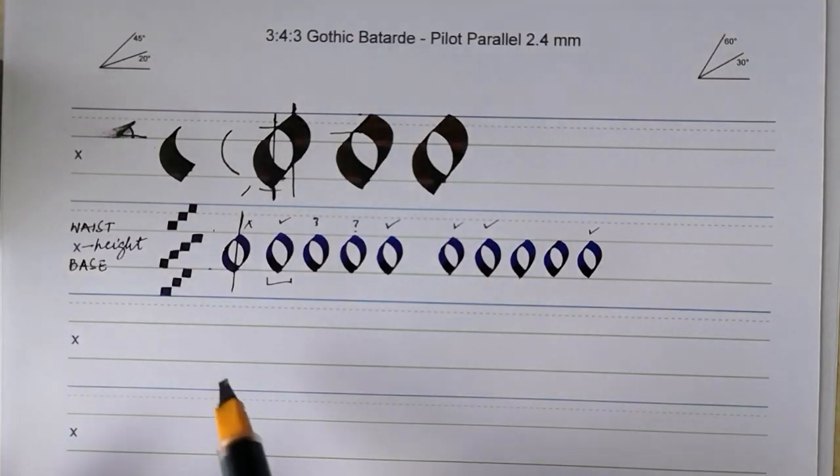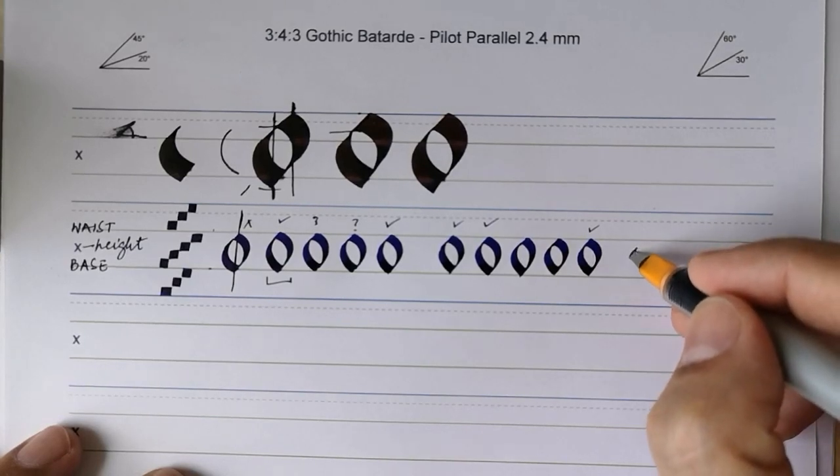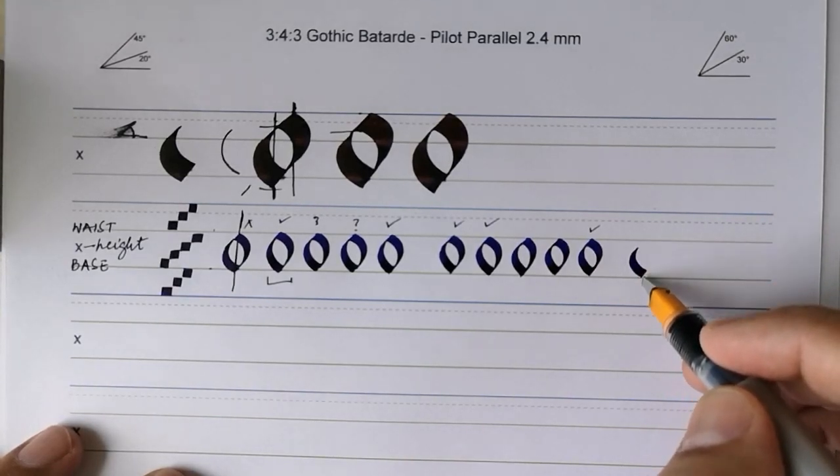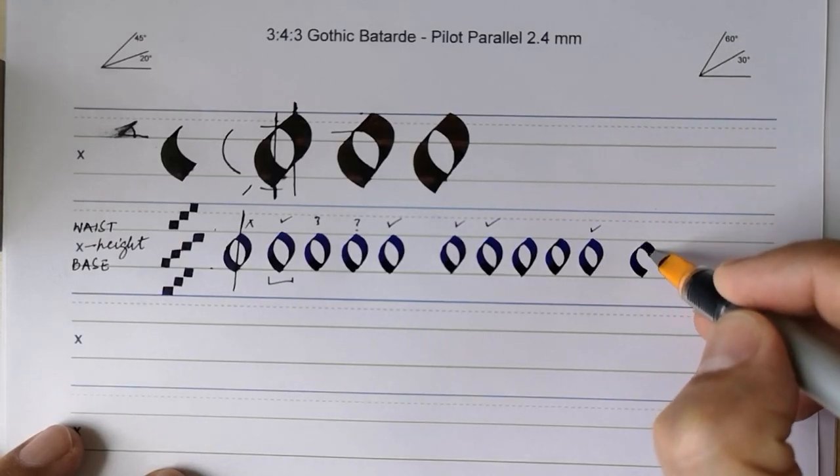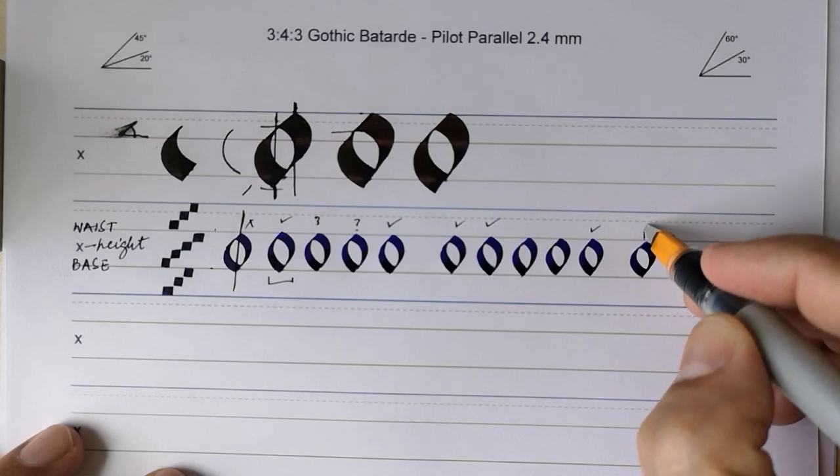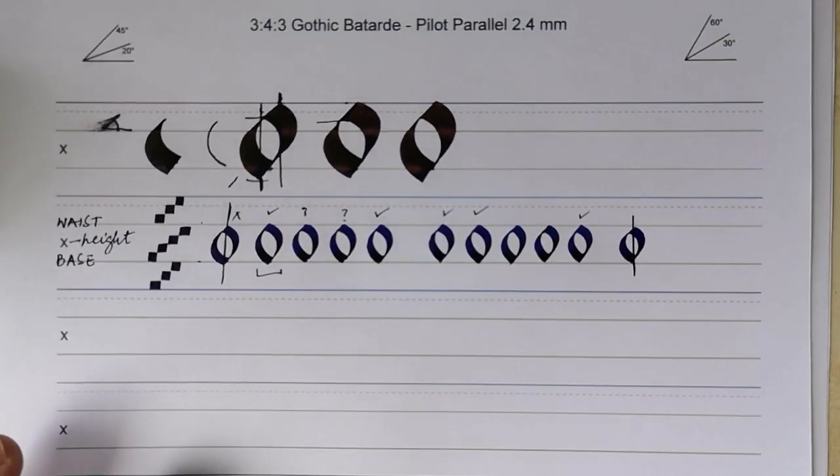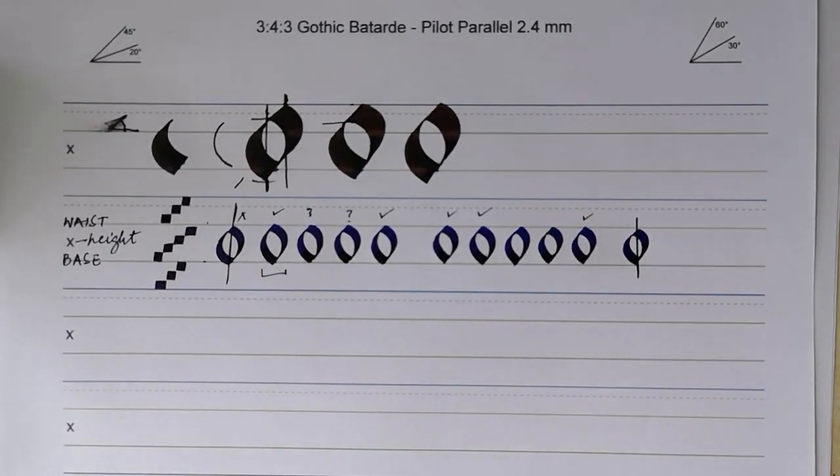So the letter O is two bullhorns starting a little bit below the x height. What we are aiming for is for the top and bottom points of this letter to be not exactly but fairly close to being on the same vertical and it will produce a balanced letter.